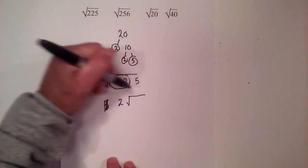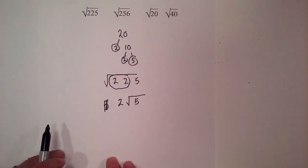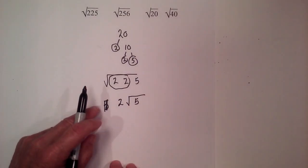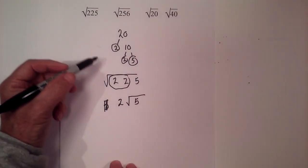Then the 5 is still left on the inside of the radical sign, so the exact square root of 20 is 2 times the square root of 5. And we have one more which applies a little bit different rule, so let's work on 40.